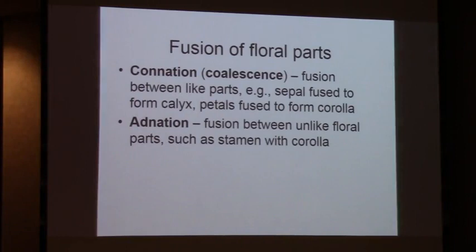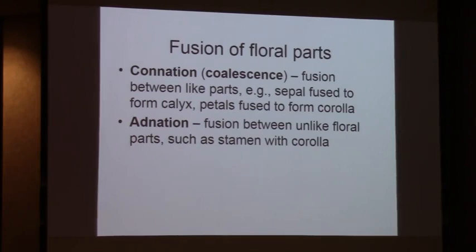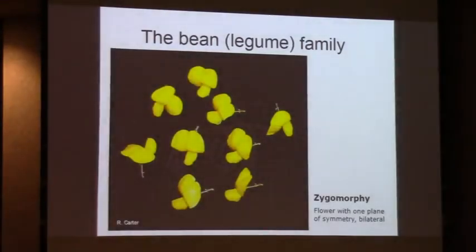Fusion of floral parts is very important. We have two basic patterns: connation and adnation. Connation is fusion between like parts - sepal fused with sepal to form a synsepalous calyx, petal fused with petal to form a sympetalous corolla. Adnation is fusion between unlike floral parts. In many cases, the stamens are fused to the inside of the corolla - that's adnation.